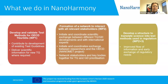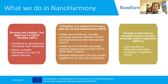NanoHarmony has three main work areas. Work Package 1 develops and validates test methods for the OECD — I will give you an update on where we are. Work Package 2 and 3 focus on forming a network to interact with all relevant stakeholders. This afternoon we have a session discussing who the relevant stakeholders are and at which development stage they should get involved. The last point is developing a structure to translate science into test methods used in regulation, looking beyond NanoHarmony.